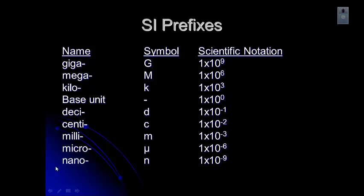And then the last one I'll ask you to memorize is pico. And even smaller than nano, lowercase p for the symbol. And then the scientific notation is 1 times 10 to the negative 12th. Don't forget to work on memorizing those because I'll expect you to know those.